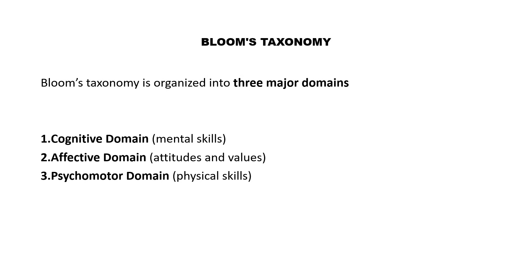These are the three major domains of Bloom's Taxonomy. We are going to talk about the cognitive domain, which talks about mental skills; the affective domain, which talks about attitudes and values; and the psychomotor domain, which is about physical skills. Let's dive into them one after the other.